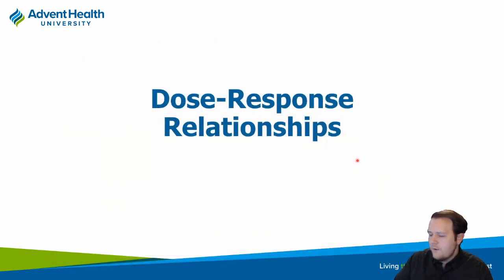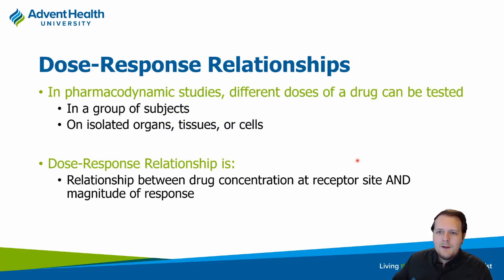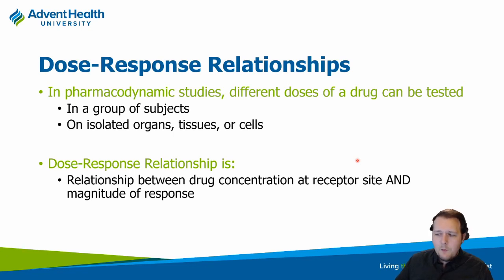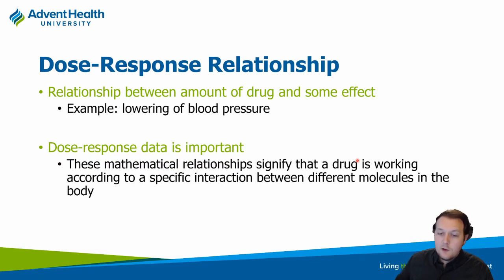Now let's get into dose-response relationships. When running a study to test whether a new drug works, drug companies administer different doses to a tissue, animal, or person, and observe the relationship between drug concentration and magnitude of response. If a drug lowers blood pressure, a bigger dose should produce a bigger drop in blood pressure. We want to understand how dose relates to the fraction of receptors being bound and the actual response produced.